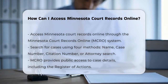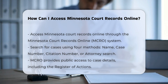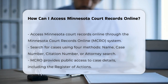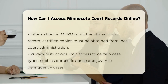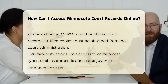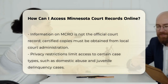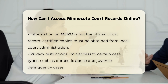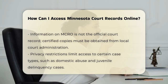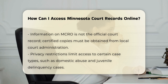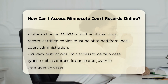Public access: MCRO allows you to view case details, including the Register of Actions, which contains case information and public documents. However, it's important to note that the information available on MCRO is not the official court case record, and any certified copies or detailed civil judgment search results must be obtained from local court administration.